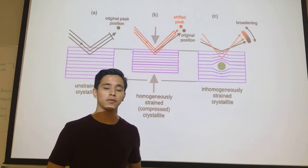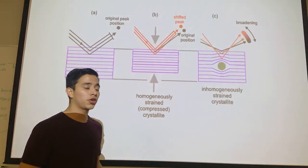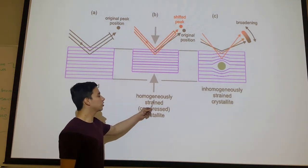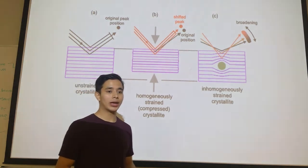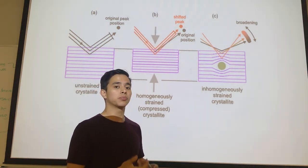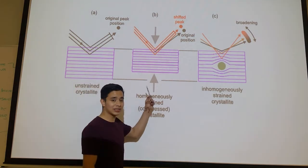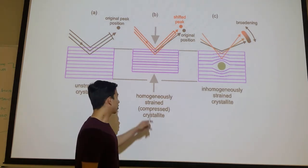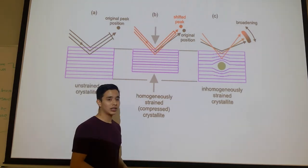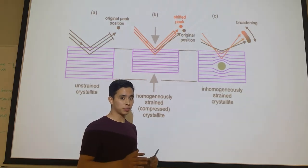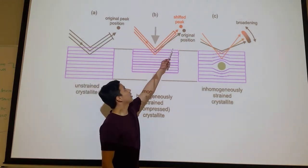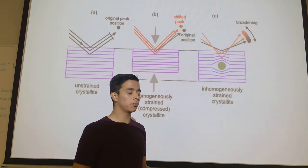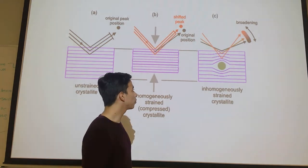The second cause of the broadening effect is strain, and here we need to identify two types of strain. The first one is called marginal strain, and that happens when the solid is being compressed. In this type of strain, the distance between planes will reduce, and the only effect is that the peak will shift its position. It won't be any broadening effect.